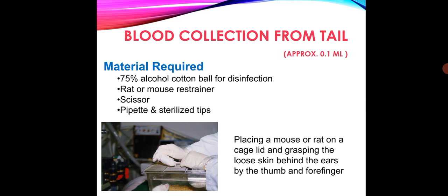Blood collection from the tail yields approximately 0.1 ml. Materials required are: 75 percent alcohol cotton ball for disinfection, rat or mouse restrainer, scissors, pipette, and sterilized tips.